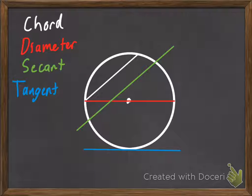And here's a picture. So, in white we have the chord. The diameter is red. The secant is green. And our tangent line is blue. And then our center of the circle there.